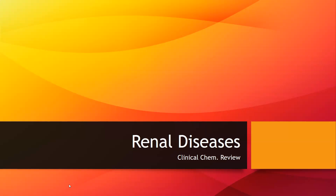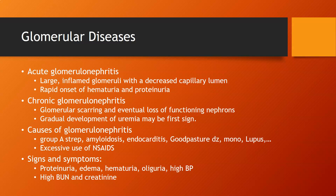This is Dr. A with a clinical chemistry review on renal diseases. Starting with glomerular diseases, the first is acute glomerular nephritis, in which you will see large and plain glomeruli with a decreased capillary lumen. Because it's an acute process, you will see a rapid onset of hematuria and proteinuria. Acute glomerular nephritis is often post-streptococcal.